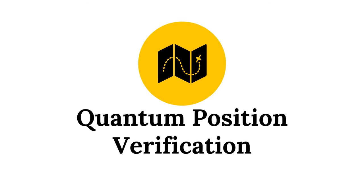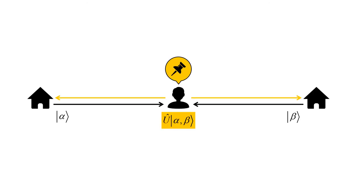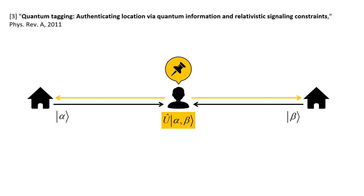So let's just use quantum communication to verify the position. Now, the question shares consist of some alpha and beta quantum bit strings, and the answer is calculated by some U unitary operation. And with that, the problem seems to be solved.